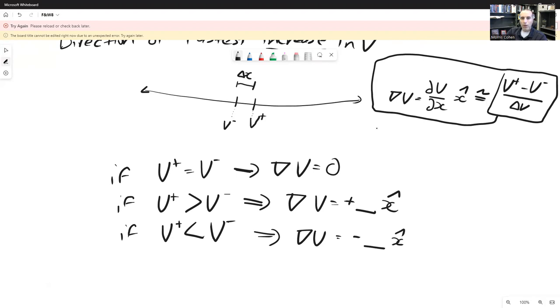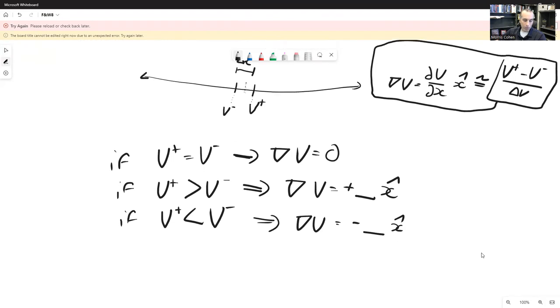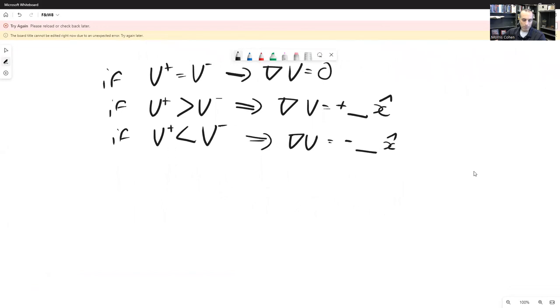All right, and so you can see if you're standing right here, you would either move toward v positive or v negative, you'd move to whichever one is bigger than the value of v where you're standing. And so the gradient tells you which direction to go. So that makes sense in one dimension. But all the gradient does is it generalizes it to three dimensions.